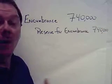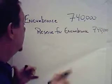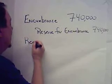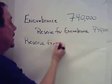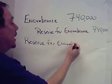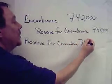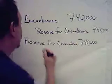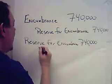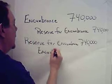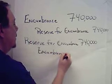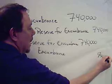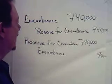We're ordering the merchandise. Step 2: the merchandise or supplies inventory is received. When it's received, we're going to reverse our original encumbrance. We received $741,000 worth of supplies, but we're going to reverse the same amount that we had originally encumbered on the PO — debit the reserve for encumbrance for $740,000 and credit the encumbrance account for $740,000.